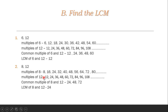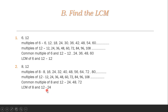Multiples of 12: 12, 24, 36, 48, 60, 72, 84, 96, 108, etc. Common multiples of 8 and 12 are 24, 48, 72. The lowest number in this list is 24. So the LCM of 8 and 12 is 24. In this way we find LCM.